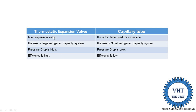The efficiency of the expansion valve is high because its pressure drop is high — this refers to the individual component efficiency of the expansion valve, not the overall performance of the refrigeration system. The efficiency of the capillary tube is low because its pressure drop is low.